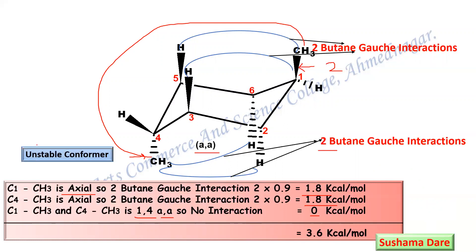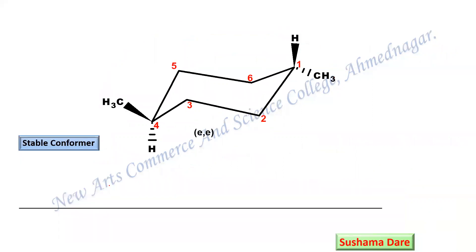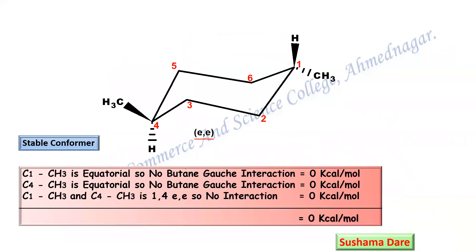The stable conformer is the EE conformer. Which interactions are present? As both substituents are equatorial: C1-CH3 is equatorial — no gauche interaction. C4-CH3 is equatorial — no gauche interaction. The 1,4-EE relation means they are far apart, so no interaction. Total energy of this conformer is zero. So this is the stable conformer for trans-1,4-dimethylcyclohexane.